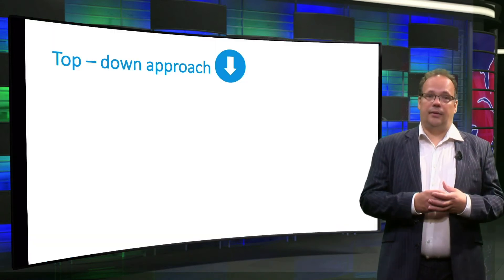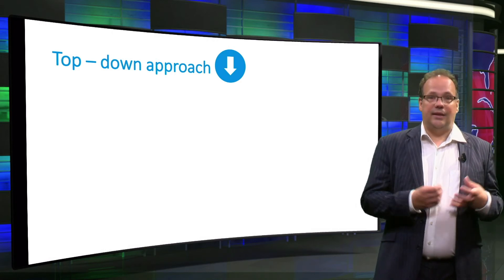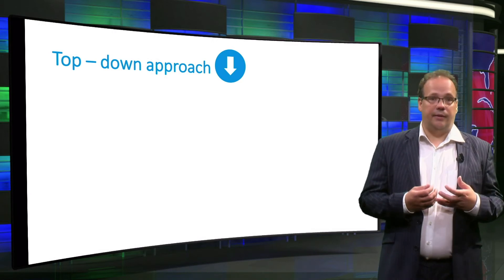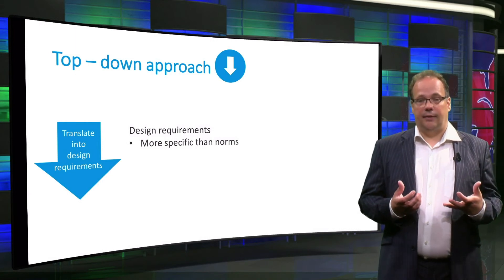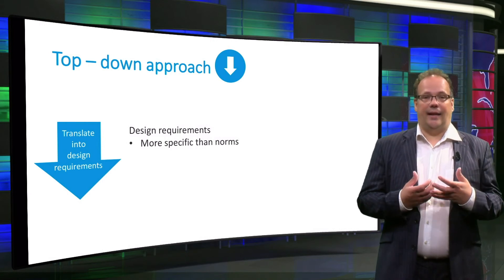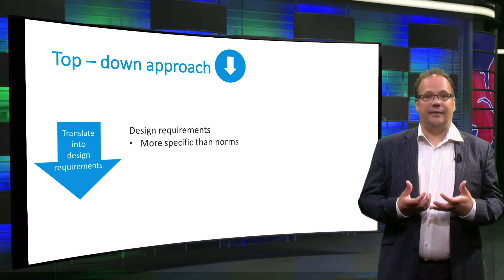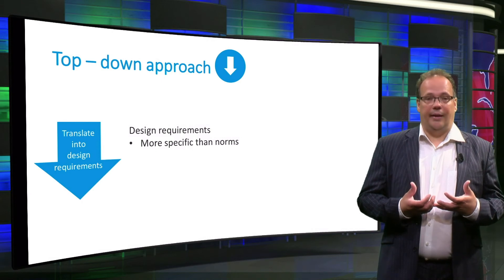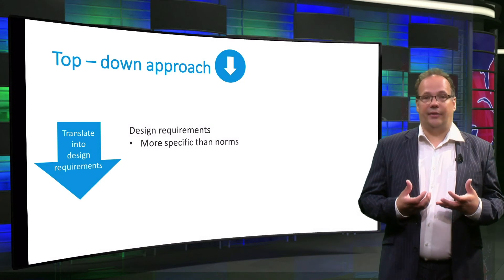The third step is to translate your norms into design requirements. Design requirements are a kind of norm, but they are more specific, formal guidelines for the system, object, or process you design. This usually entails things like specifying which values are most important, describing how and when they should manifest in the design, making general goals into concrete measurable outcomes, and establishing the process that will be used to realize your design values and goals.